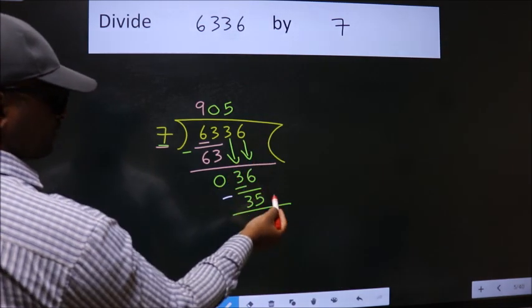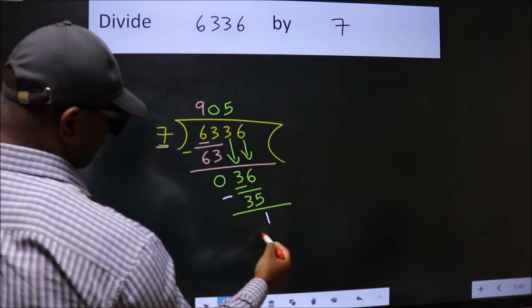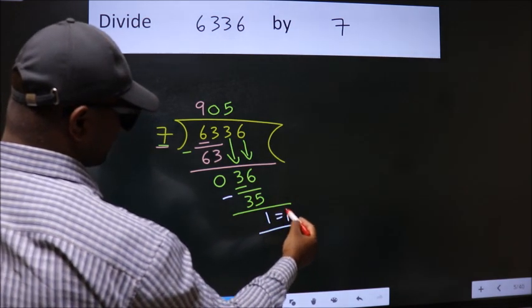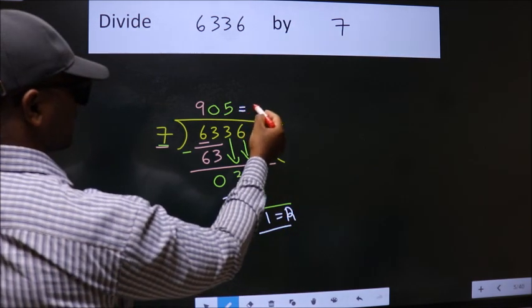No more numbers to bring down. So we stop here. This is our remainder. This is our quotient.